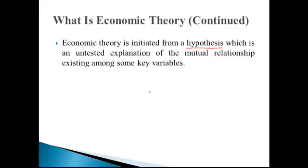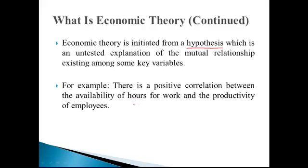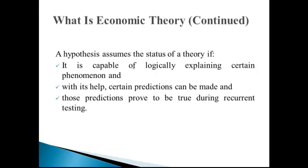For example, if you take two variables — one is availability of hours for work and the second is productivity of employees — and you write that there is a positive correlation between the availability of hours for work and the productivity of employees, then this sentence becomes a hypothesis.